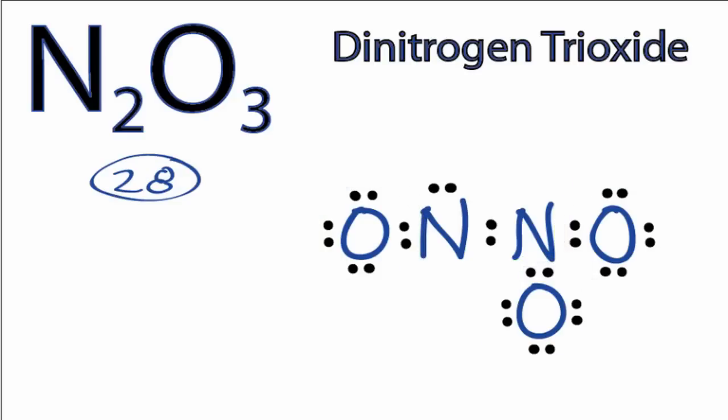But the nitrogens, each nitrogen only has 6 valence electrons, so we need to form double bonds in order to give those nitrogens octets. Let's move two of these valence electrons here from the oxygen in with the nitrogen to form a double bond.